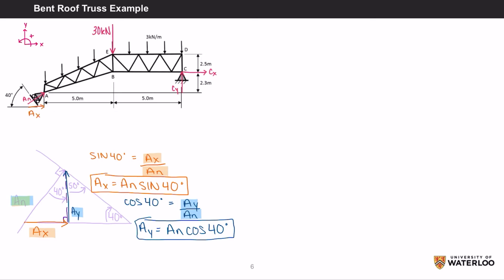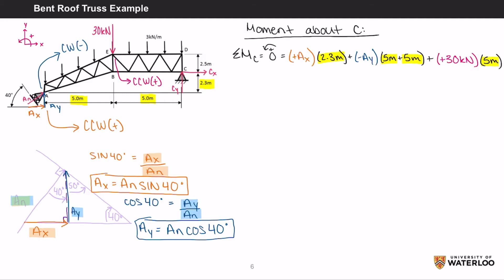We can also add the X and Y components onto the original diagram. Now we can write out the moment equation. Remember, moment is equal to the force times the perpendicular distance. The moment about C equals 0, which equals positive AX times 2.3 meters plus negative AY times 10 meters plus positive 30 kilonewtons times 5 meters. If you rearrange the equation, you'll find that AN equals 24.3 kilonewtons.